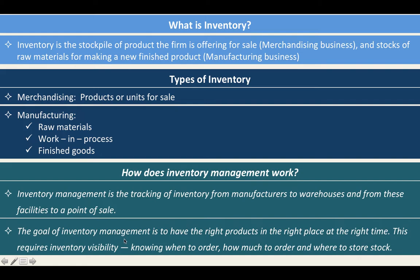The goal of inventory management is to have the right products in the right place at the right time. This requires inventory visibility — knowing when to order, how much to order, and where to store it. You should have an overview of all the areas wherein the movement of this inventory is occurring.